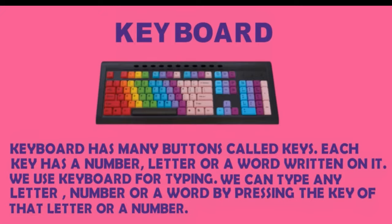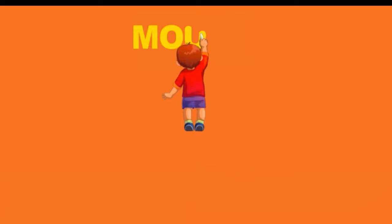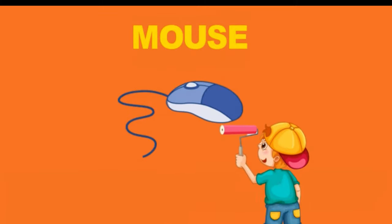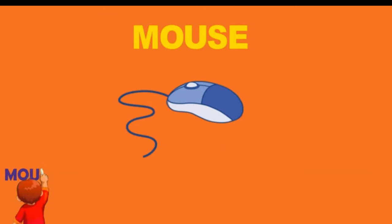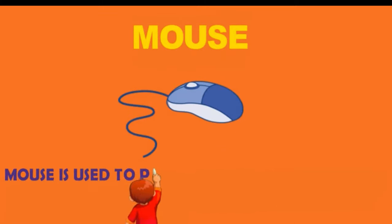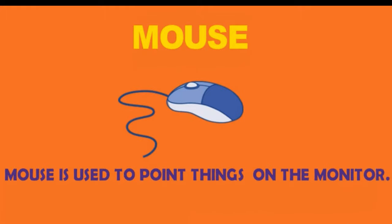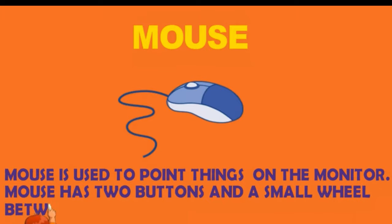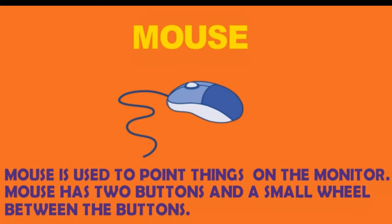Mouse — a mouse is used to point at things on the monitor. The mouse has two buttons and a small wheel between the buttons.